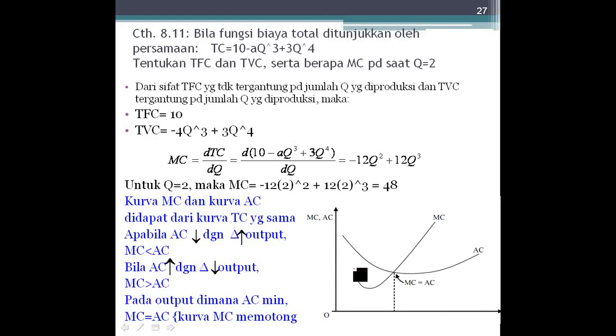When Q is equal to 4, Q is equal to 4, memenuhi turunan keduanya lebih besar dari 0. Turunan pertama sama dengan 0, turunan kedua lebih besar dari 0. Ini syarat AC minimum.